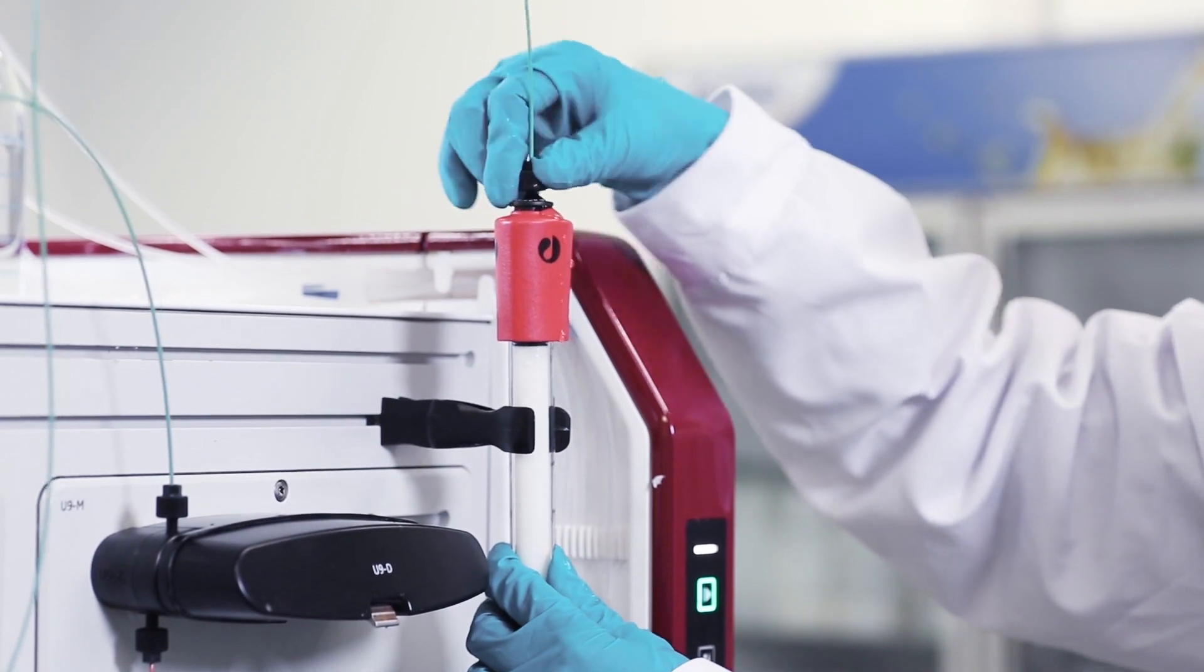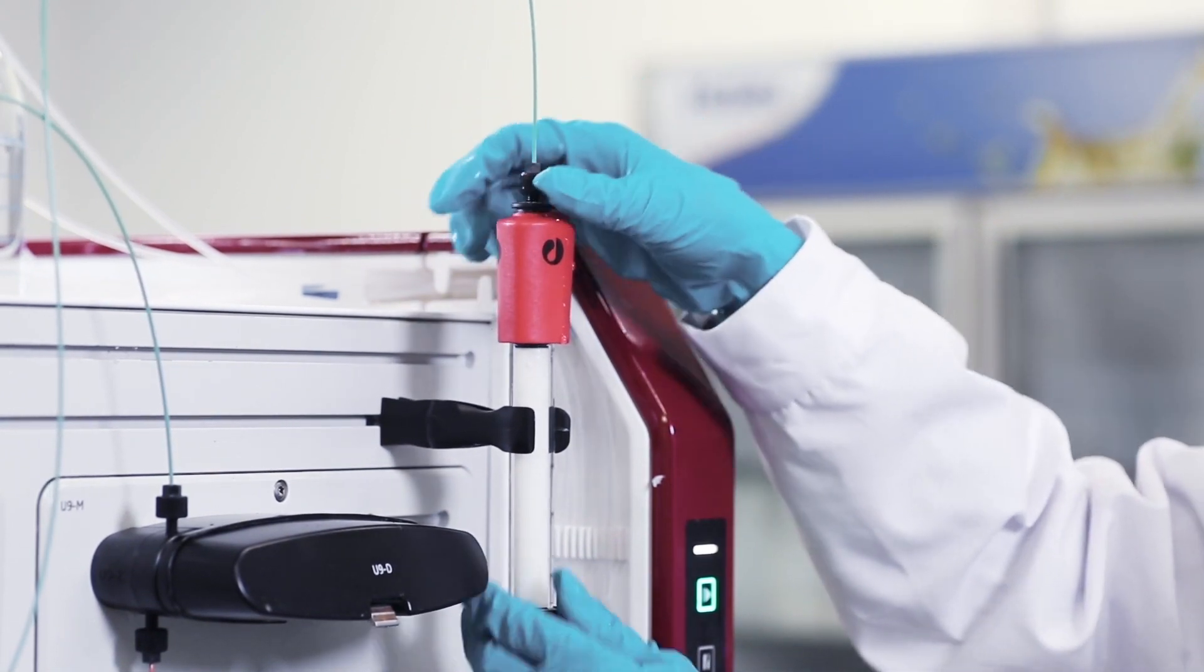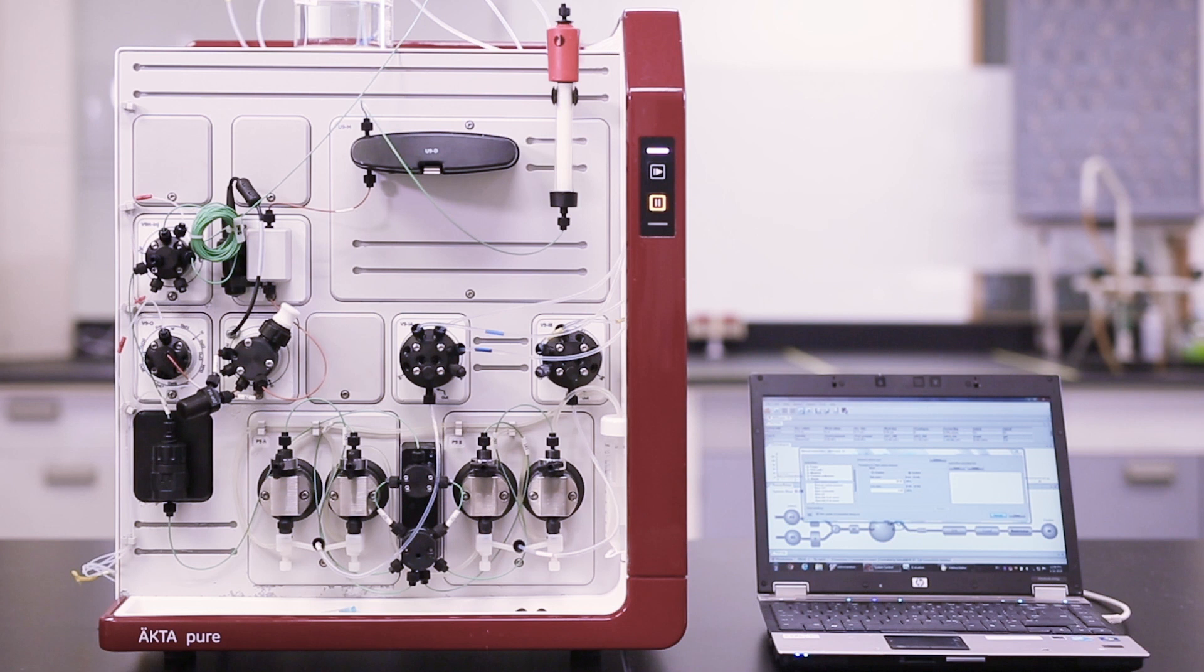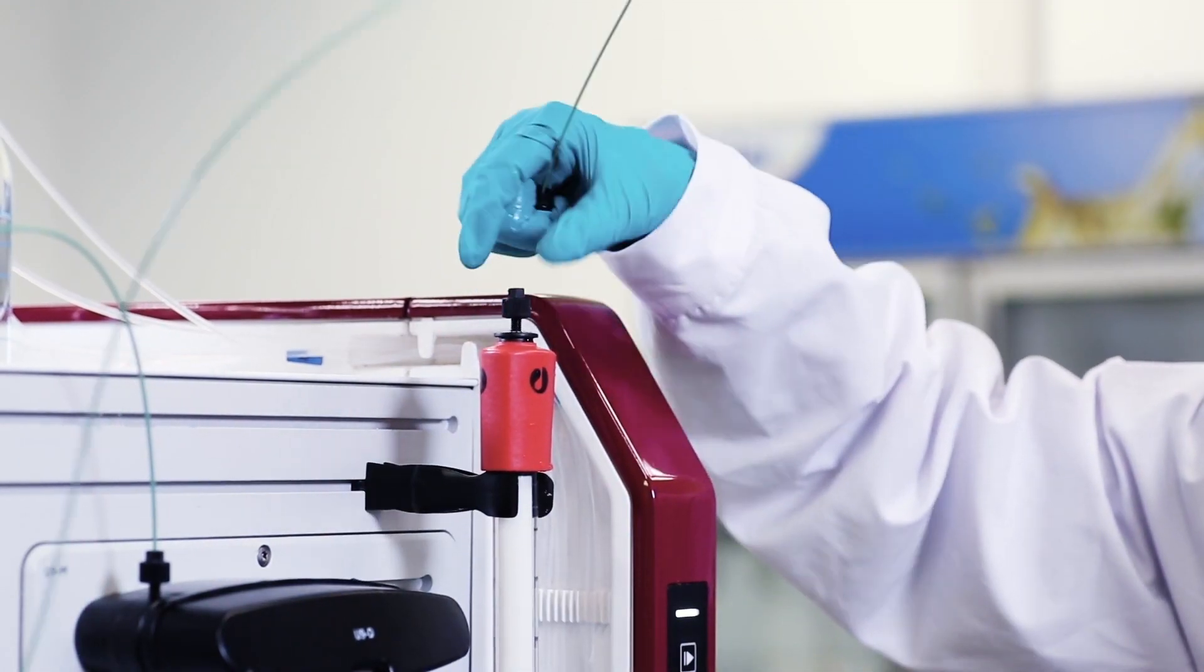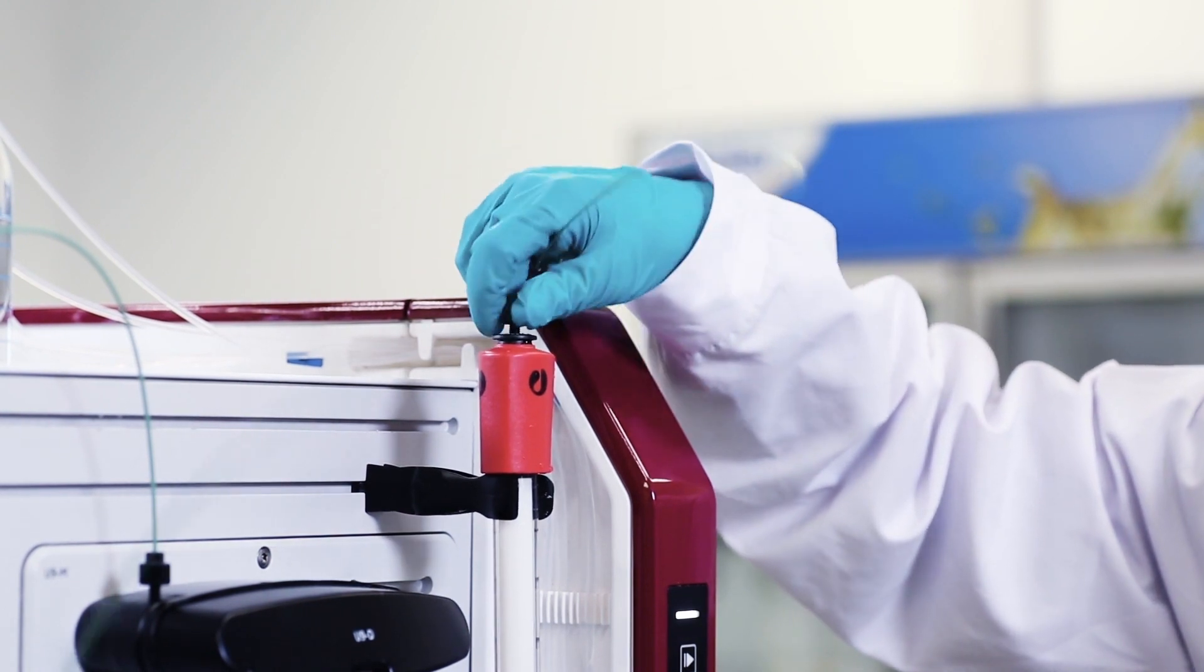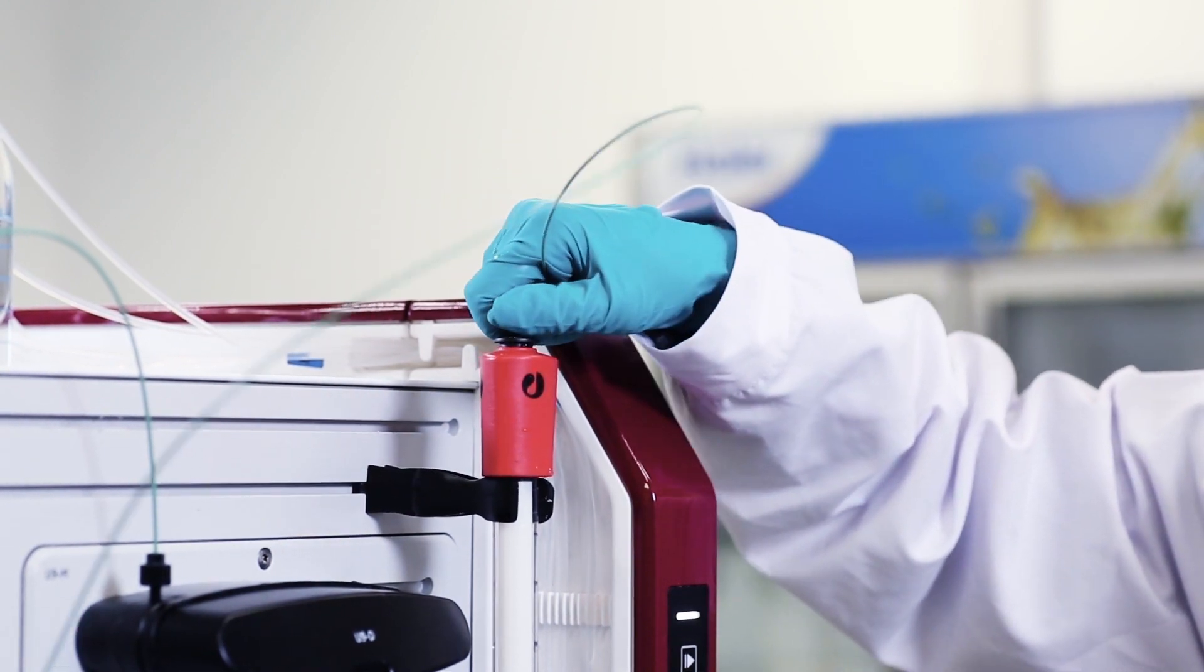Your column is now packed. If you are not using the column right away, remove the connection to the pump. Screw stop plugs into both the top and bottom end of the column. Inspect for any channel or gap and your packed column is ready to use.